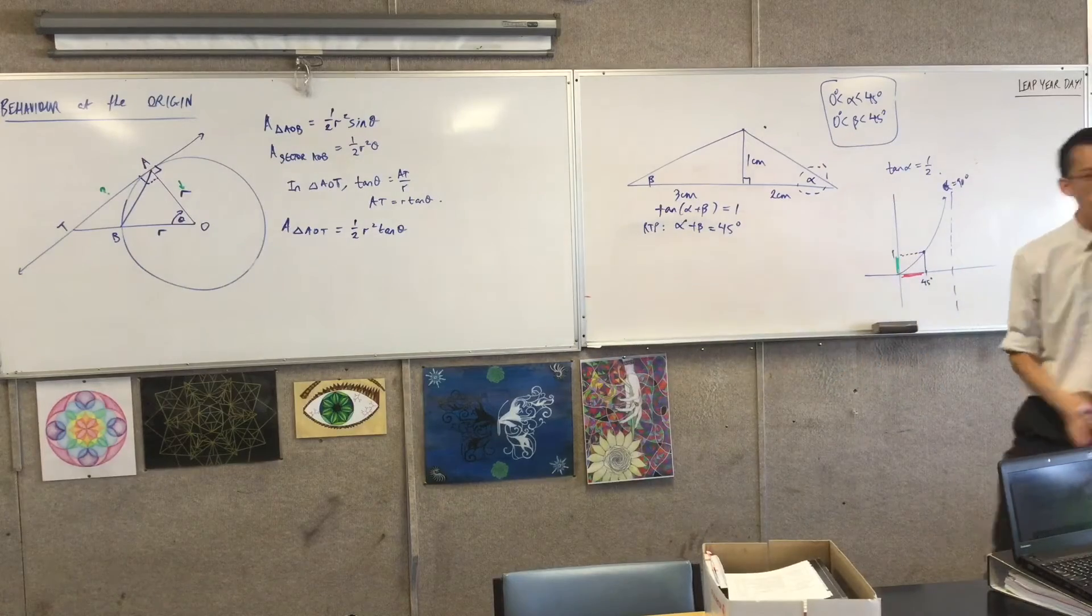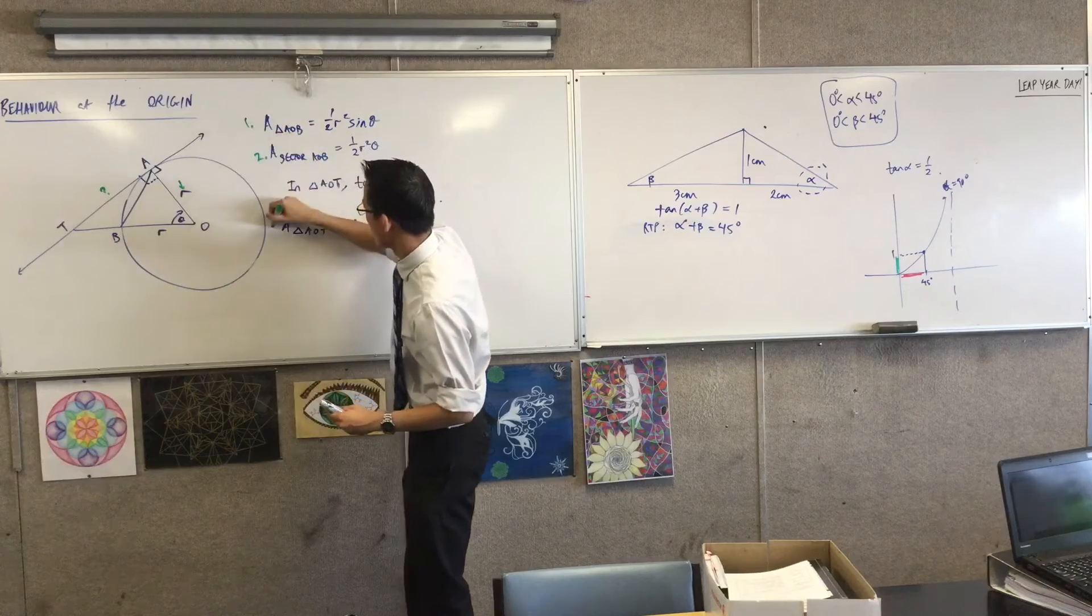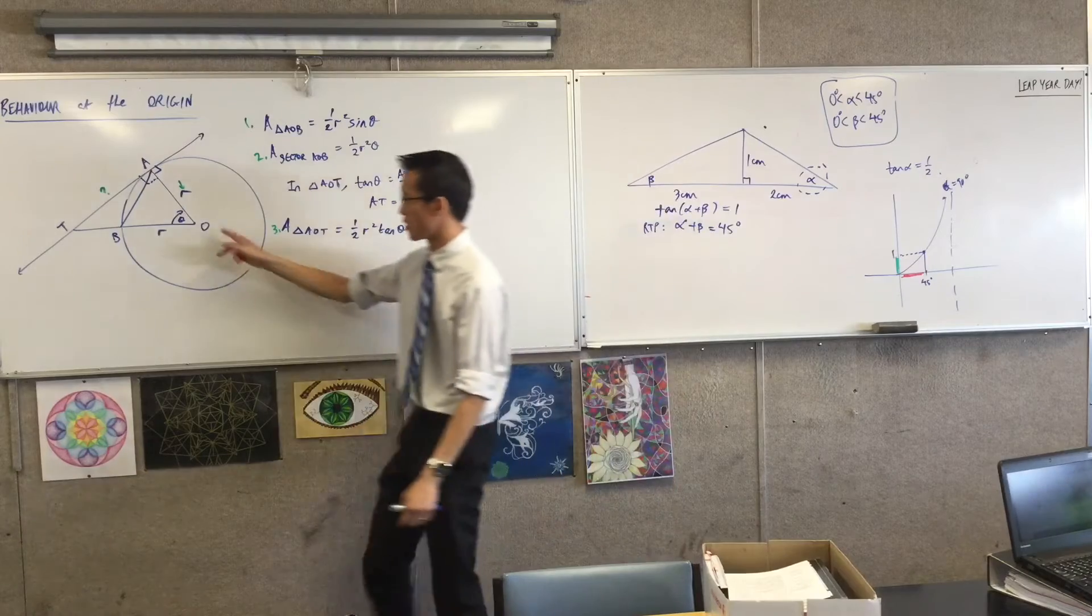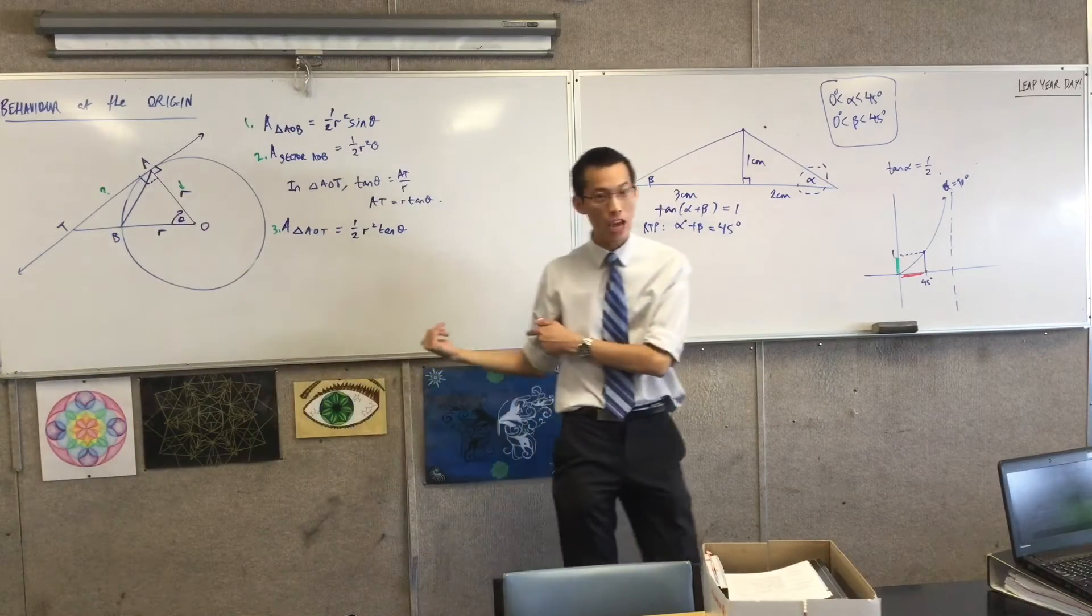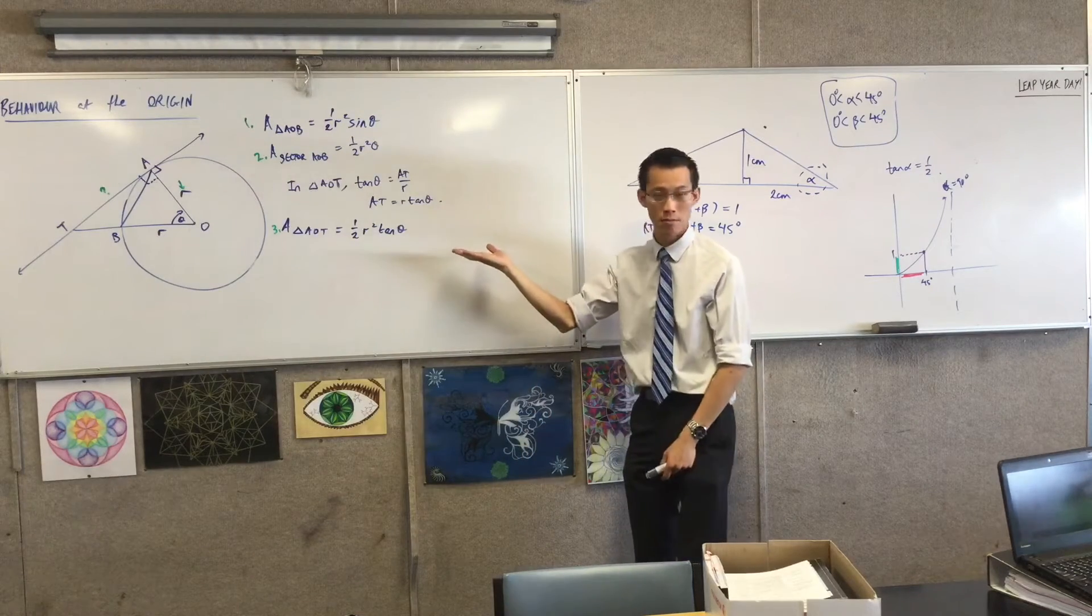Now, remember we started off by saying, I've got three shapes, right? One, two, three, and they are all nested within each other. So long as you're within this, so long as you're acute, so long as theta is less than pi over two, you're going to get these three shapes, and they're always going to be in this size order. I'm in ascending order at the moment.